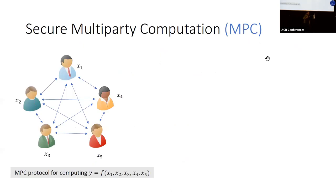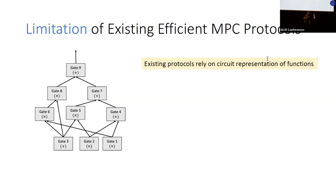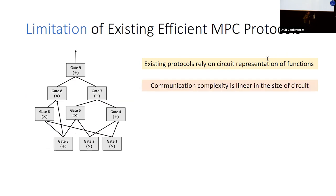MPC, as we've seen through this day, is a protocol that enables a group of mutually distrusting parties to jointly compute a function over their private inputs, while guaranteeing that an adversary who controls a subset of the parties should not learn anything beyond the output of the function. While there has been tremendous progress in improving the efficiency of MPC protocols, most of the techniques in efficient MPC literature currently rely on a circuit representation of the functions, and the communication complexity in these protocols is typically linear in the size of the circuit.